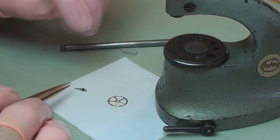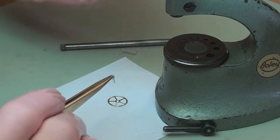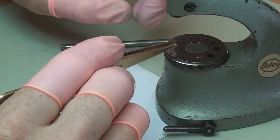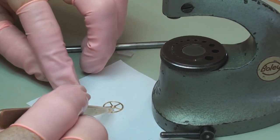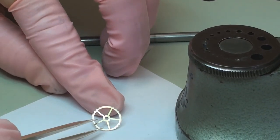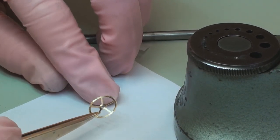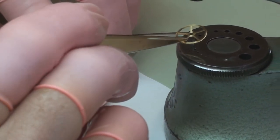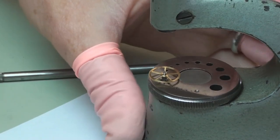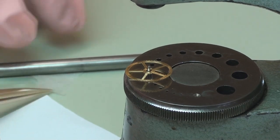So now what we have to do is rivet the wheel onto the pinion, and we just simply do it using this staking tool. This is a wheel for one of the Daniels and it's just been finished with a very simple and yet elegant radially grained surface. We drop it onto the pinion and then we just have to seat it.